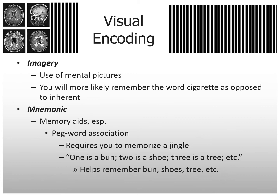Peg word association is one mnemonic device. This requires you to memorize a jingle. An example: one is bun, two is shoe, three is tree — and you have this jingle memorized all the way to whatever number. I've seen it done through like 20.